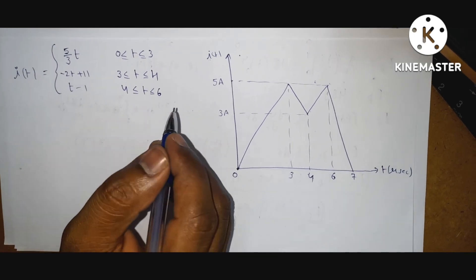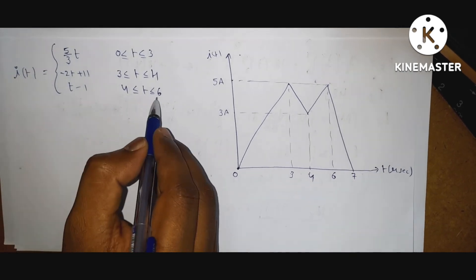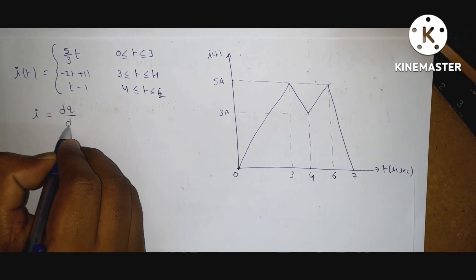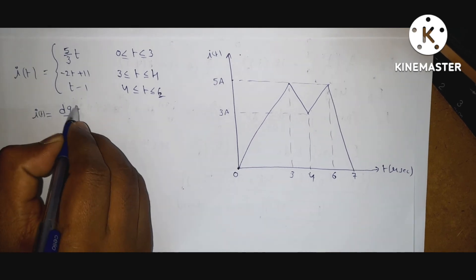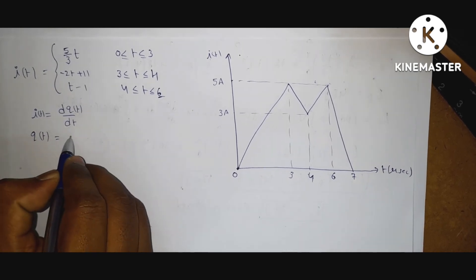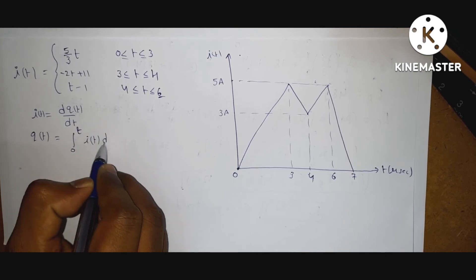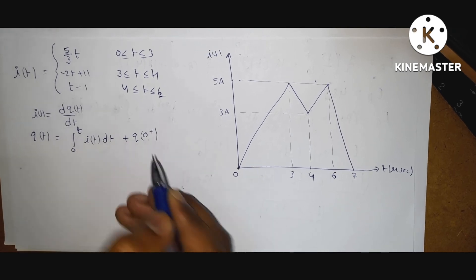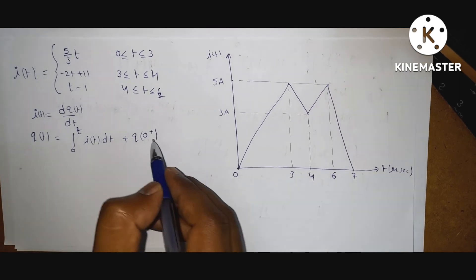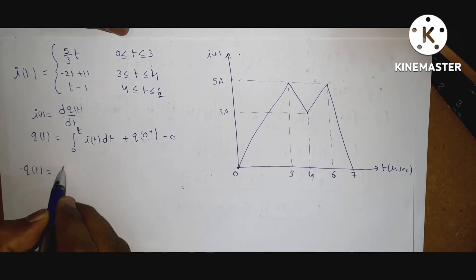So what is the current flowing through any element? It is the rate of change of charge: I equals dQ/dt, plus initial charge Q zero. In the problem, initial charge is not given, so consider Q(t) equals integral from 0 to 3 of the current expression dt.